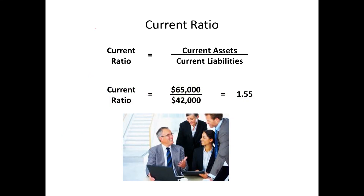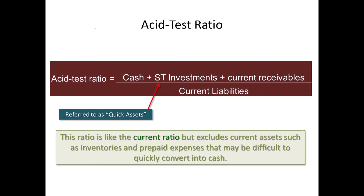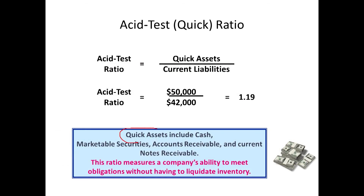There is also the acid test ratio, which measures the same thing as the current ratio — that is, the ability to pay short-term debt — but it does it in a different way. It recognizes that not all current assets are equal. If you have $20,000 worth of cash as your only current asset, you are in a much better position to pay your short-term debt than somebody who has only $20,000 of current assets but it's all in inventory. So the acid test says we're only going to count in our numerator those quick assets — those that are very liquid, such as cash, short-term investments, and receivables.